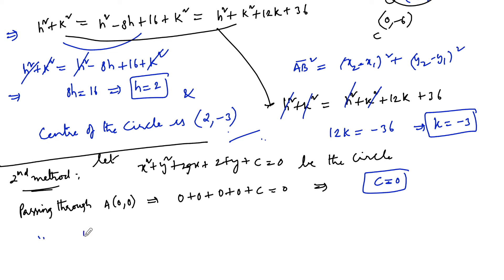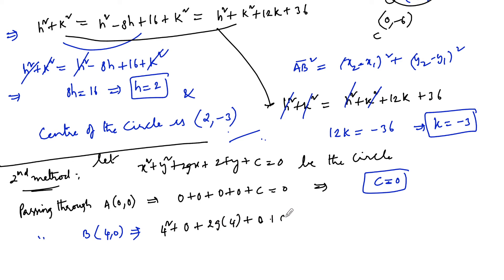Now substituting point B(4,0): 4² + 0 + 2G(4) + 0 + C = 0, which gives 16 + 8G = 0, so G = −2.